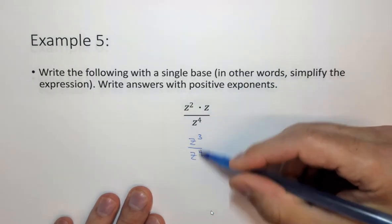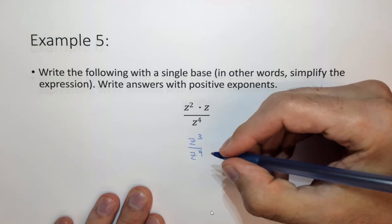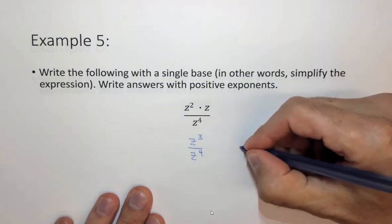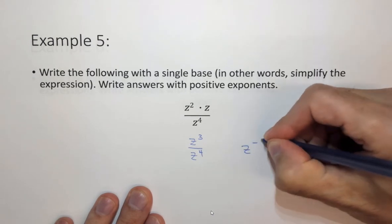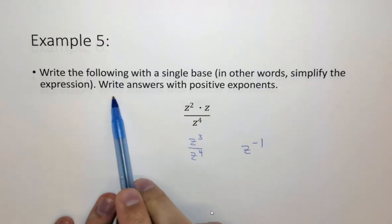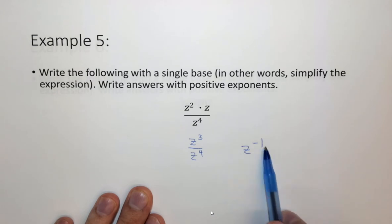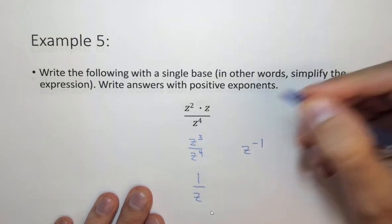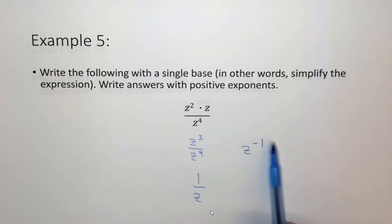Now we have to divide which is z to the 3 minus 4 which equals z to the minus 1. It says write all answers with positive exponents. Well if you have z to the minus 1 this is the same as 1 over z. So z raised to a negative exponent is the same as 1 over z.